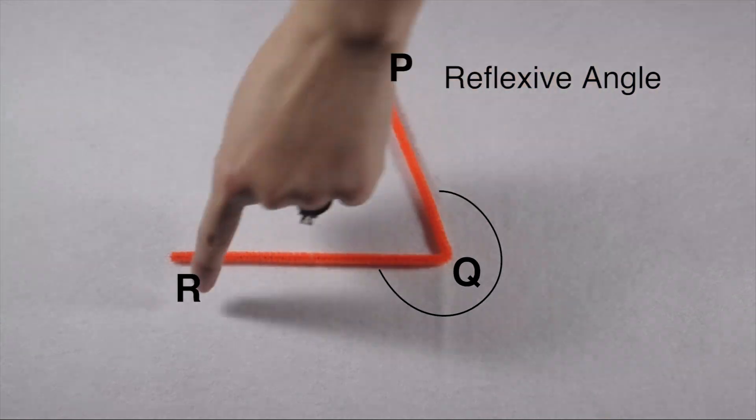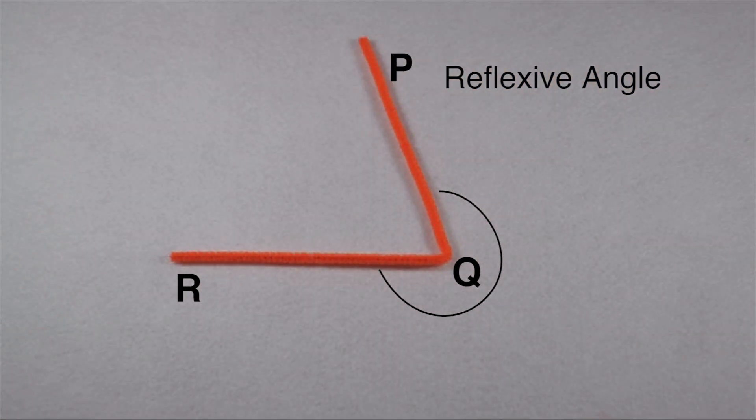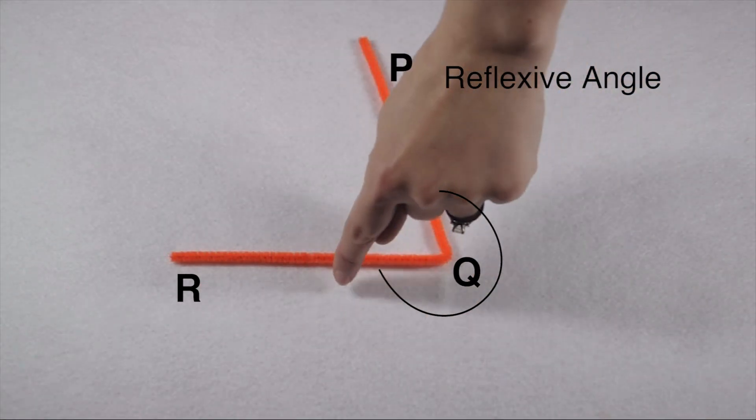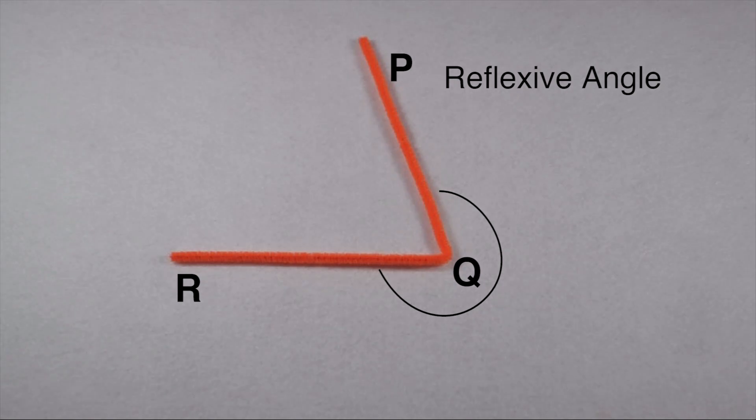Angle P, Q, R looks like it could be an acute angle, but we can see it's measured around the outside edge. That means it goes beyond 180 degrees, and it's a reflex angle.